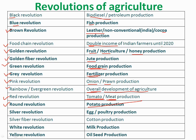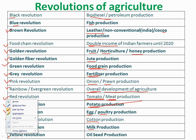Round revolution is related to potato production. Silver revolution is related to egg or poultry production. Silver fiber revolution is related to cotton production. White revolution is related to milk production. Yellow revolution is related to oil seed production.